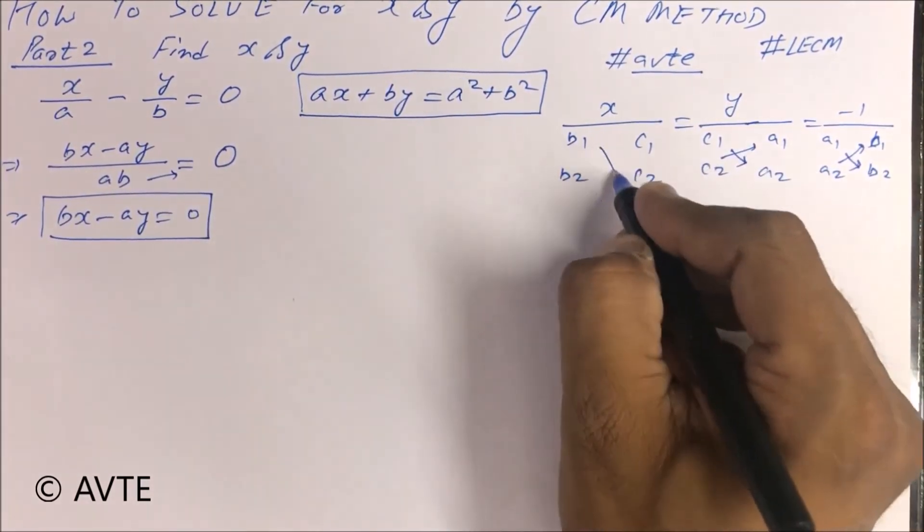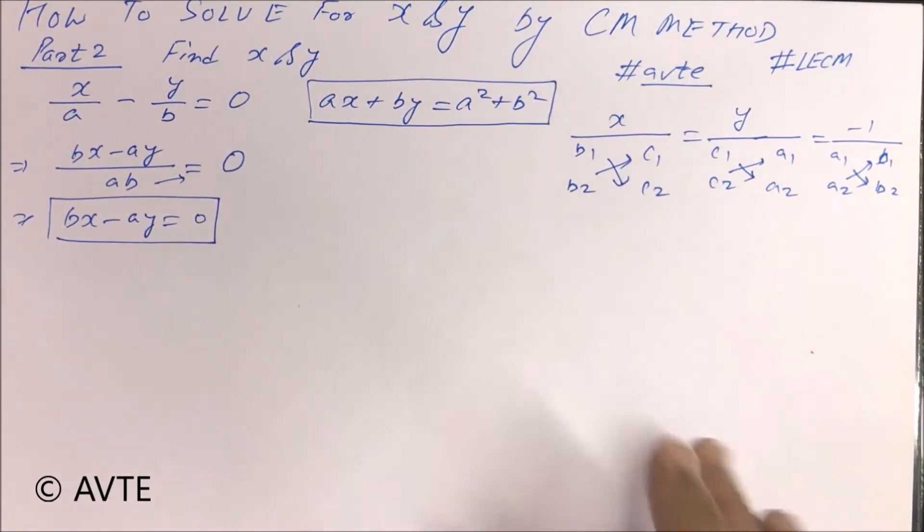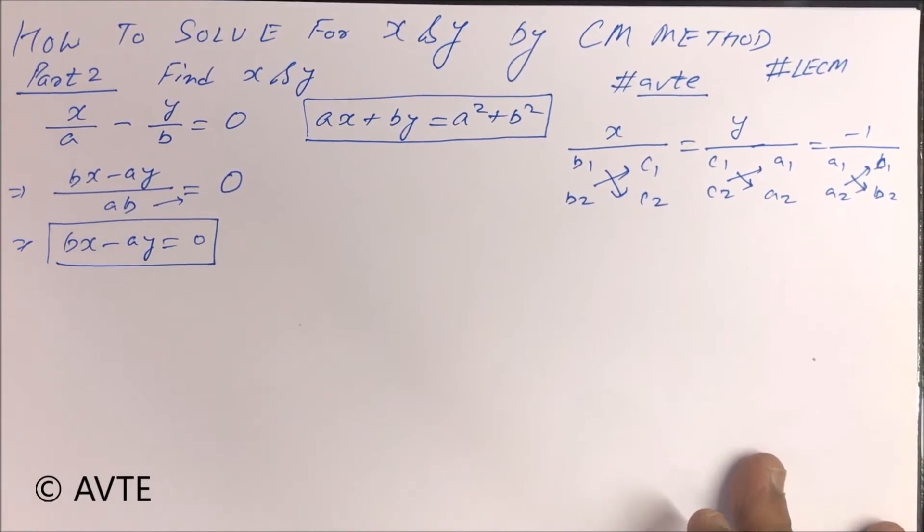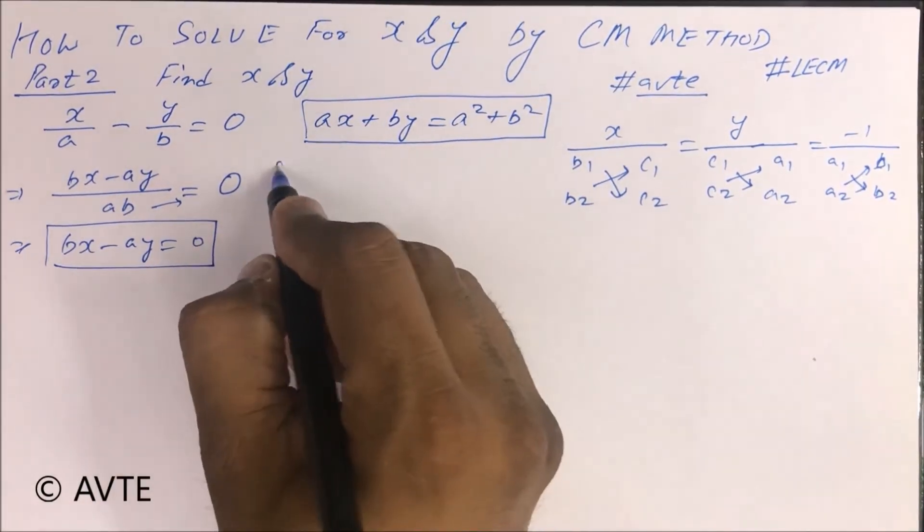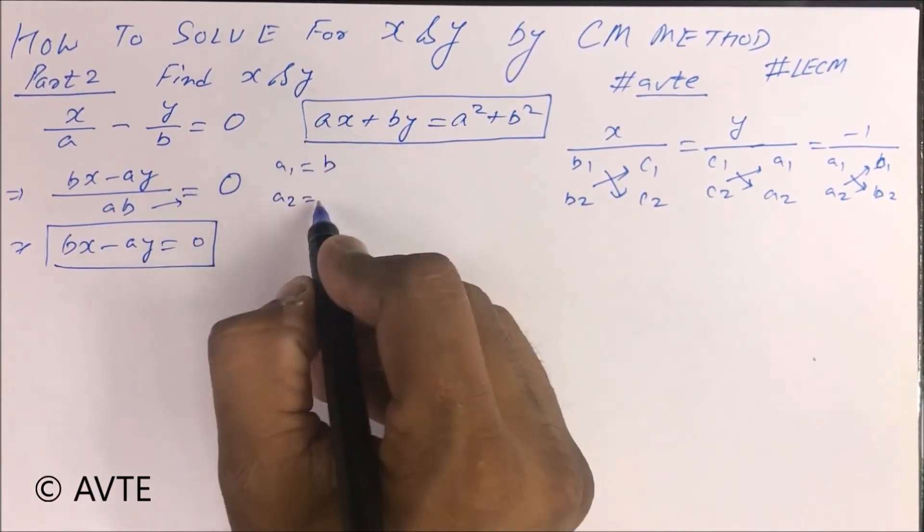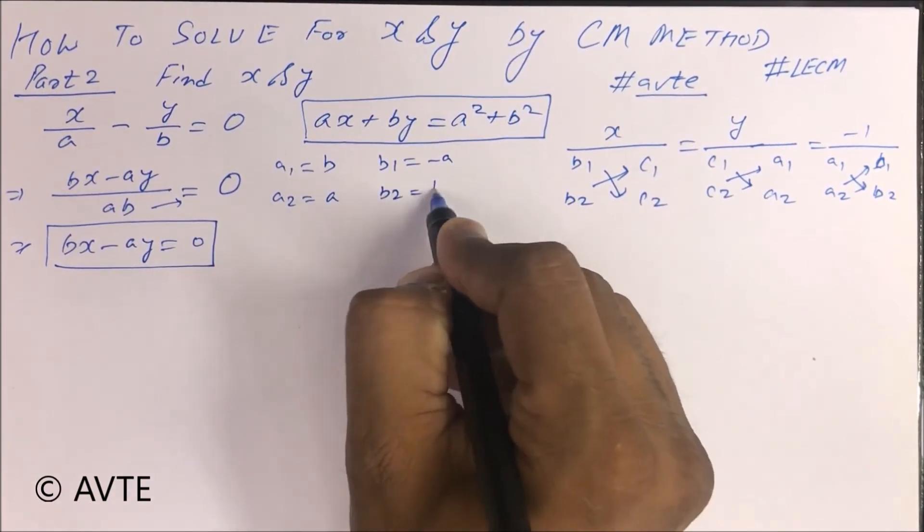this equation. So here it is: your A1 is B, A2 is A, B1 is minus A, B2 is B, C1 is 0, and C2 is A square plus B square.